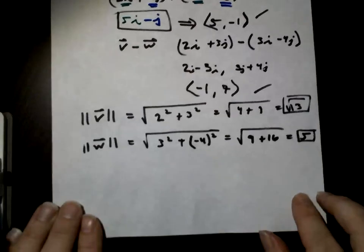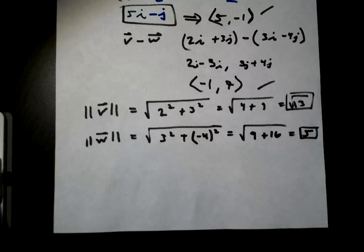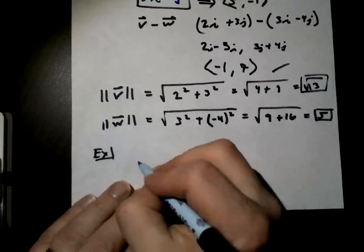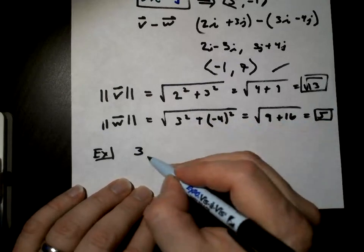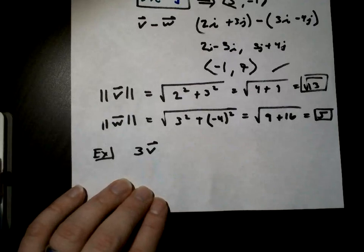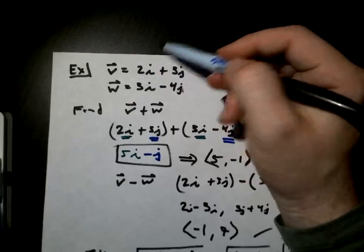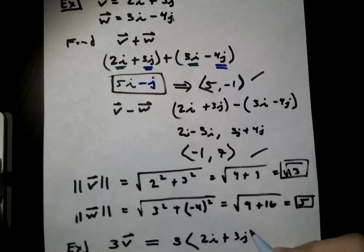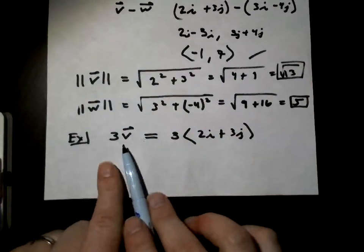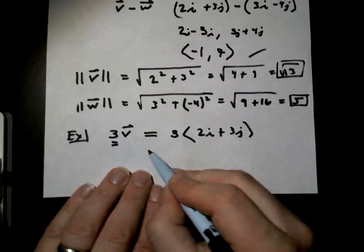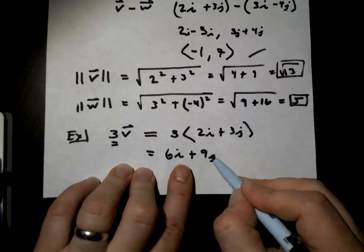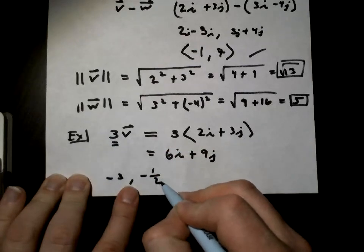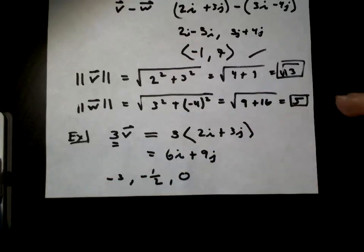What if I wanted to multiply vector V by a scalar of 3? That's just going to multiply each component by 3. You can also try this with negative 3, with one half, or with zero — try those on your own.